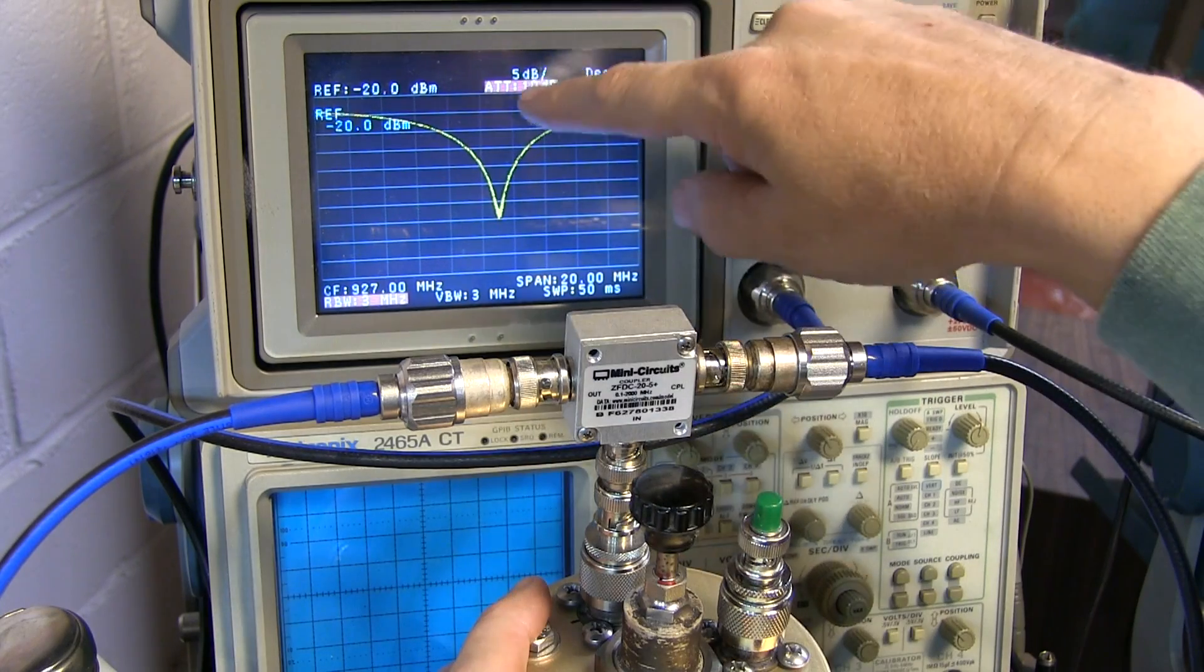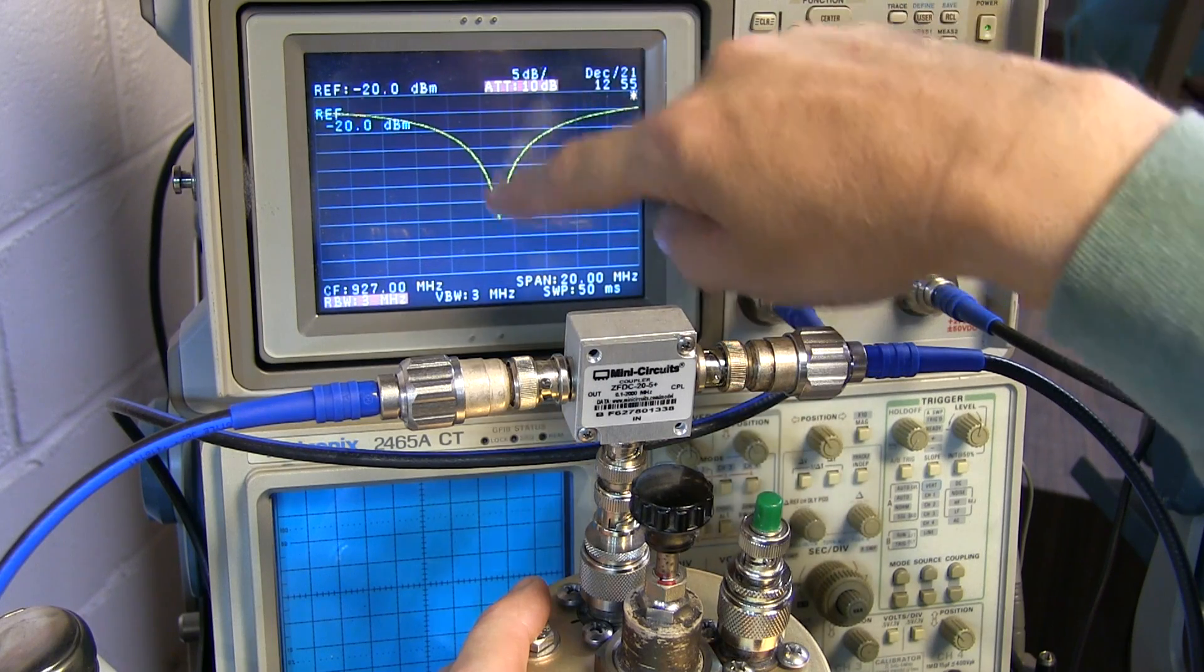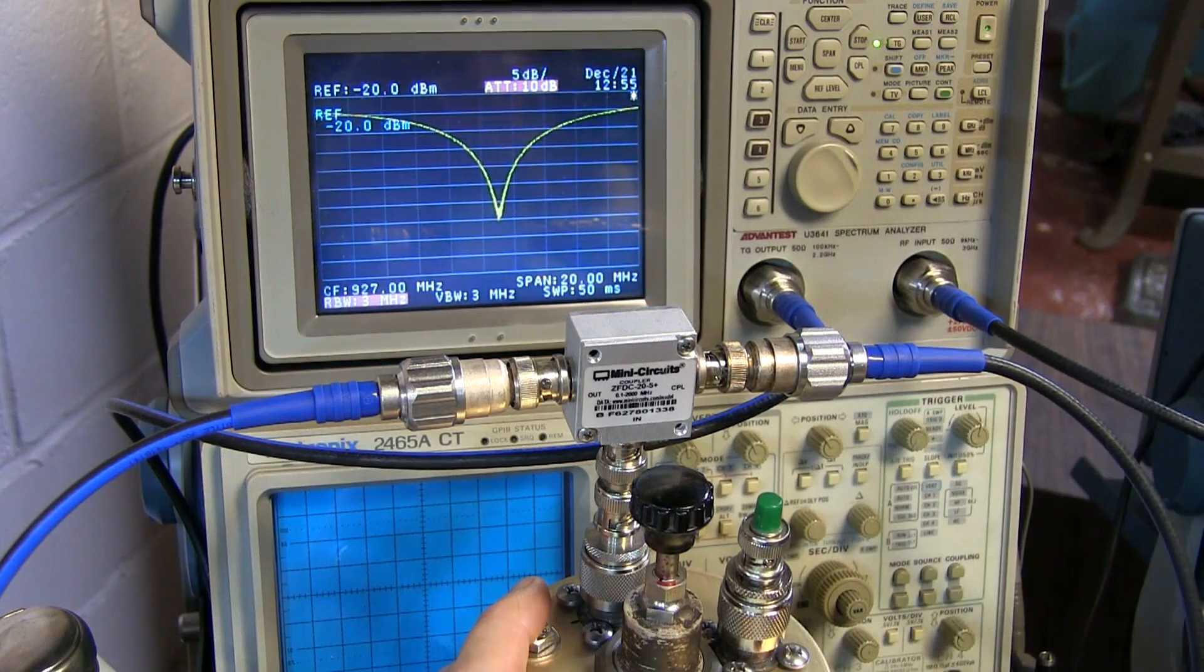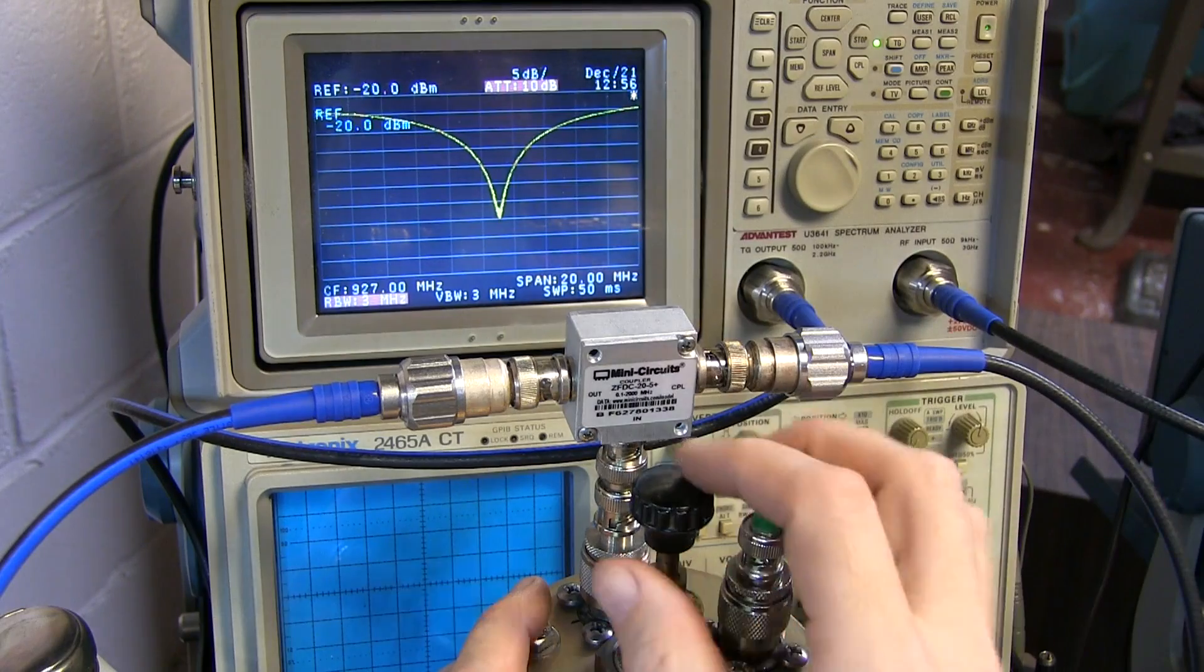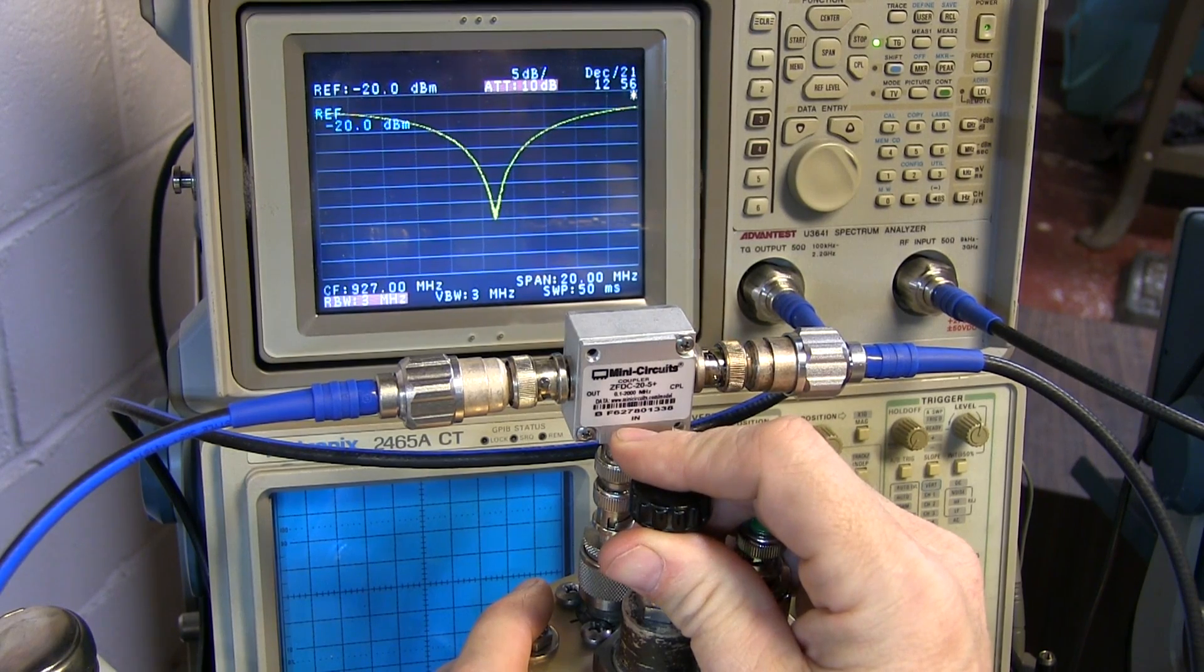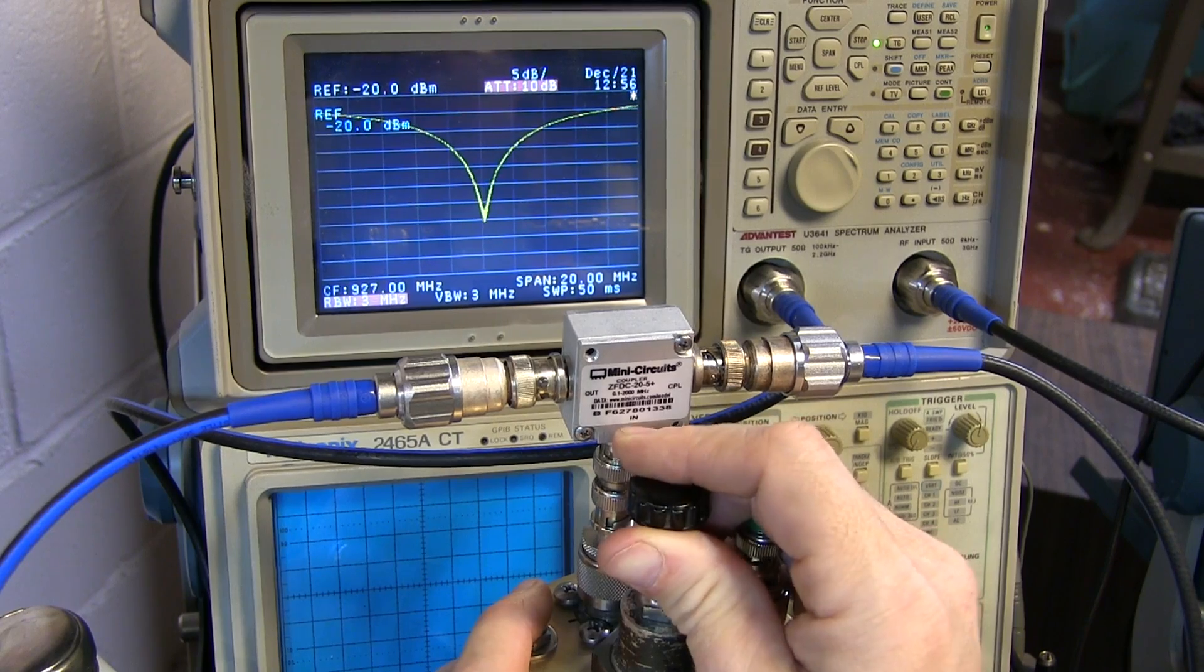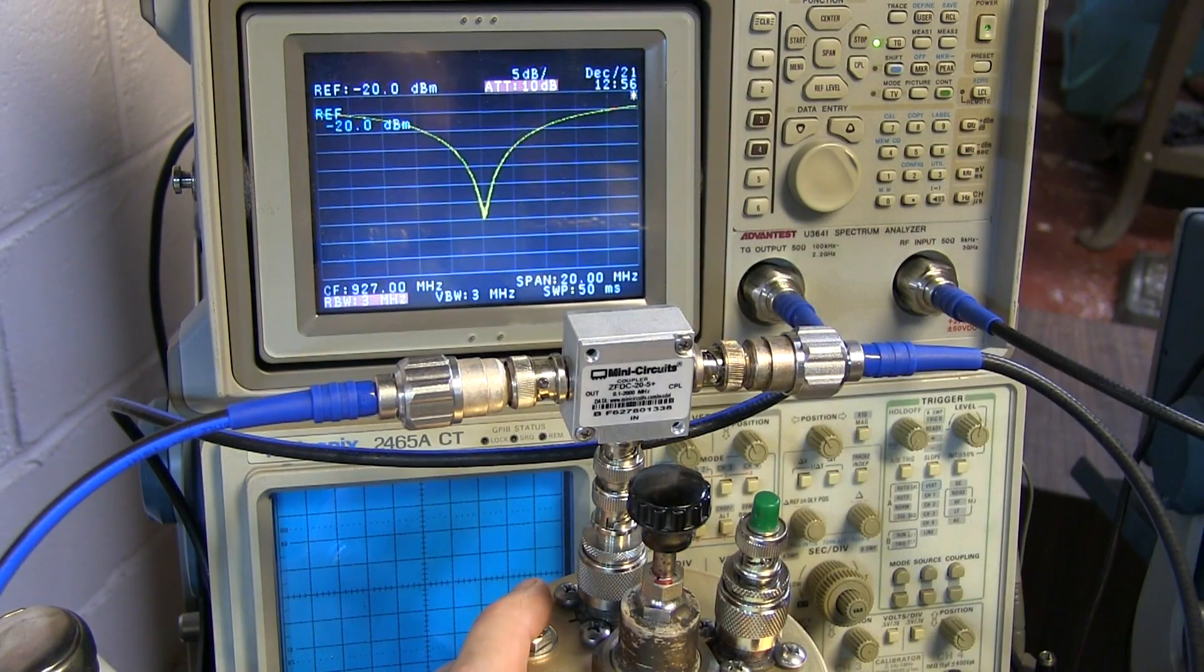I've even changed from 1 dB per division up to 5 dB per division because we have such a sharp response here we don't need to expand that waveform so much to actually see where that peak is. So now we can more precisely see where the exact center frequency of this filter is and then tune it to where we want it to be by using that minimum on the return loss plot. This is a much more precise way to set the center frequency of the filter than using the bandpass characteristic.